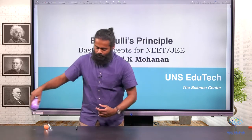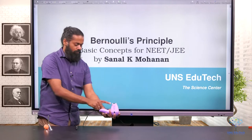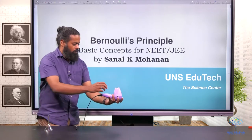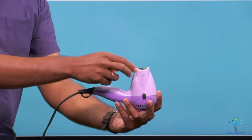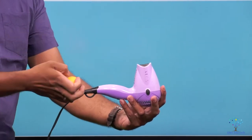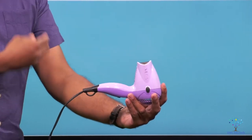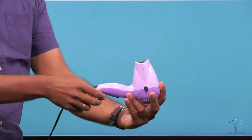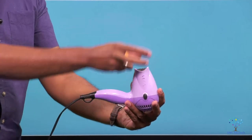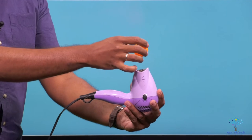Here I have a hair dryer. I am going to switch it on so a jet of air comes out. Then I will place this ping pong ball in the jet stream — just observe, and then we will discuss what happened.